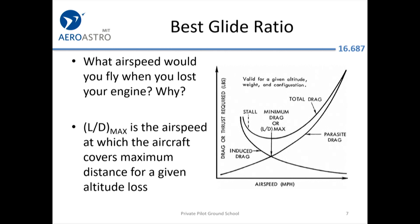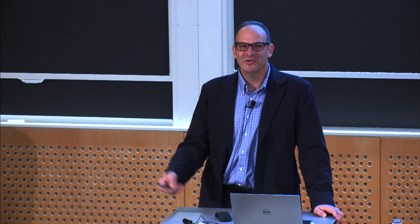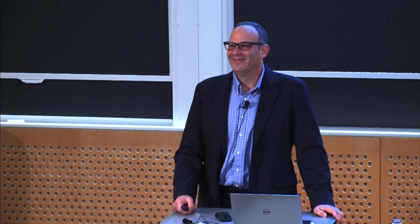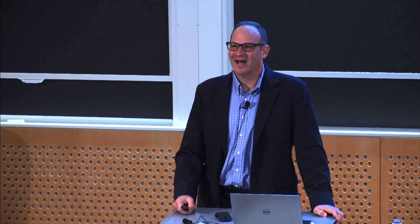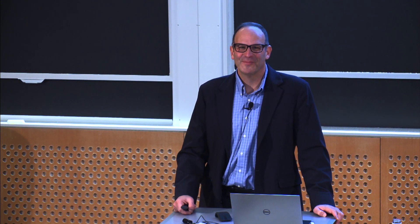You've got best glide ratio: if you want to get to a decent place to land and you've lost your engine, L over D max is an excellent speed to fly, because that's where lift over drag is at its highest point and you'll make the best distance over the ground. Again, that has to be adjusted for wind — if you're going into a 100-knot wind and the Cirrus best glide speed is 96 knots, that's not going to work out very well.